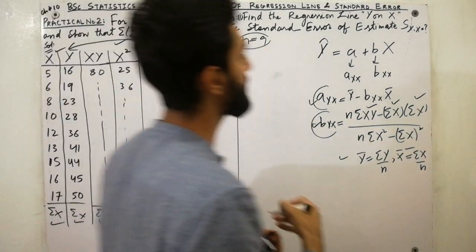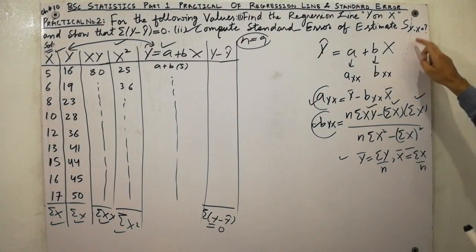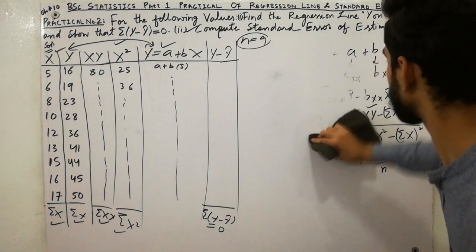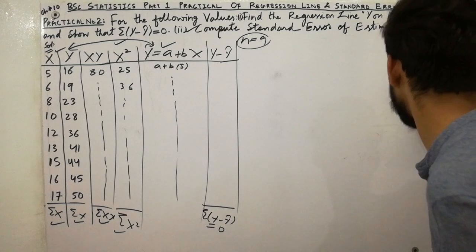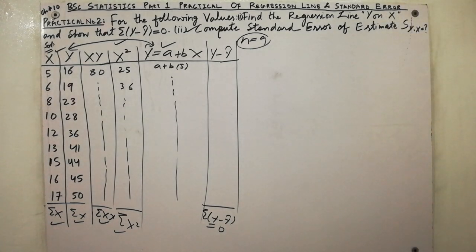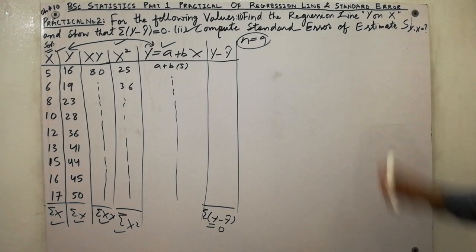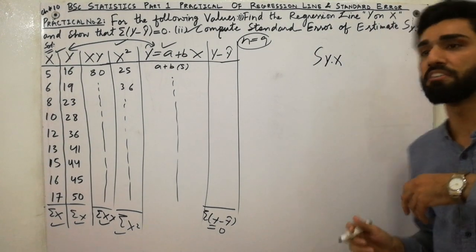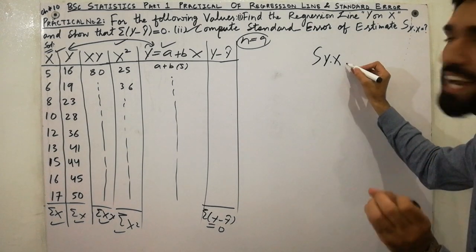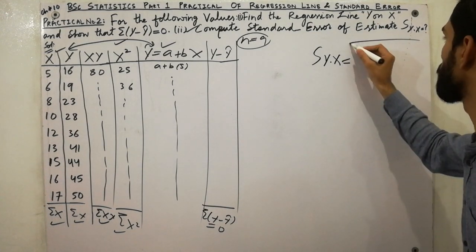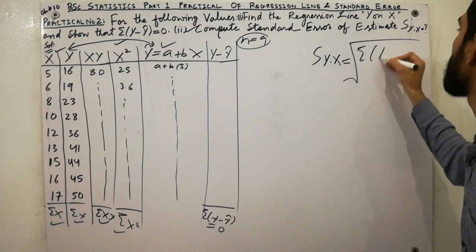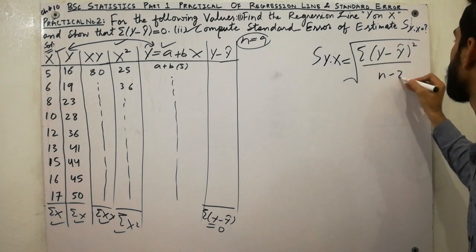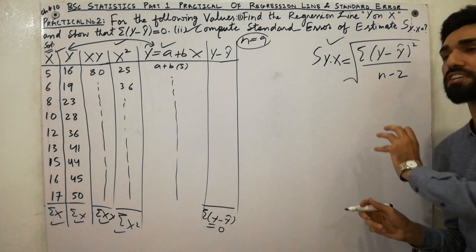The last step is to calculate the standard error of estimate, s(y.x). The formula is very important: s(y.x) = √[Σ(y − ŷ)² / (n − 2)]. This is the standard deviation of the regression.